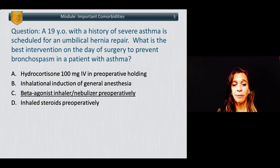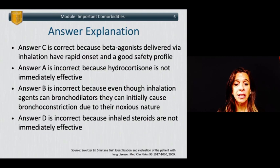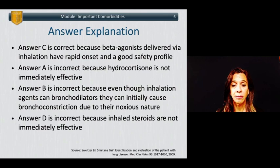The answer is giving beta-agonist inhaler or nebulizer preoperatively. Answer C is correct because beta-agonists delivered via inhalation have rapid onset and a good safety profile. Answer A is incorrect because hydrocortisone is not immediately effective. Answer B is incorrect because even though inhalational agents can be bronchodilators, they can initially cause bronchoconstriction due to their noxious nature. Answer D is incorrect because inhaled steroids are not immediately effective.